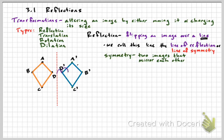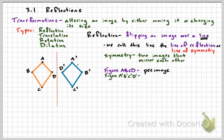The first point and the new point are equidistant from the line of reflection. We call the first image the pre-image, and we call our new image — the one after we do the reflection — the image. Pre-image is before transformation; image is after transformation. The pre-image point and the image point are both equidistant from whatever the line of reflection is.